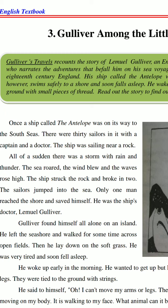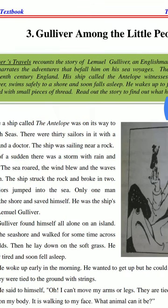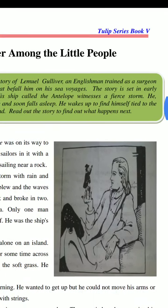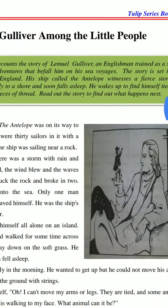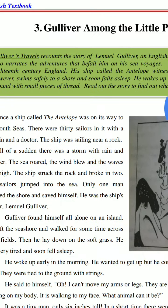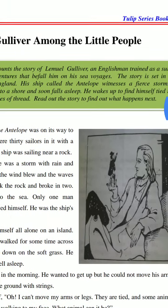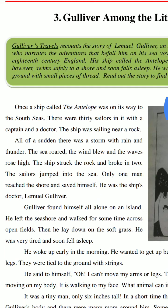کہ اس کے ساتھ کیا کیا ہوا۔ یہ 18th century کا وقت ہے — 18th century کا time ہوتا ہے یہ England میں۔ تو اس کا ship جس کا نام Antelope ہے، اس میں ایک بہت خوفناک طوفان آتا ہے سمندر میں — ایک خوفناک طوفان آتا ہے اور اس ship کے ساتھ کیا ہوتا ہے وہ ہم آگے پڑھیں گے۔